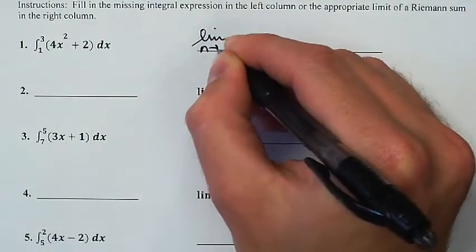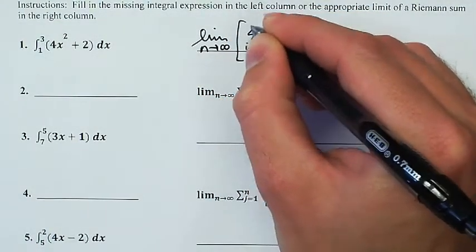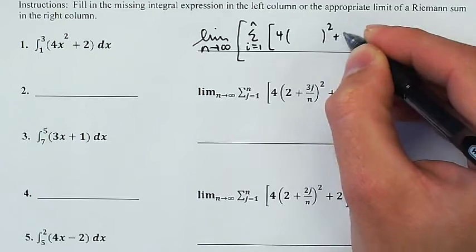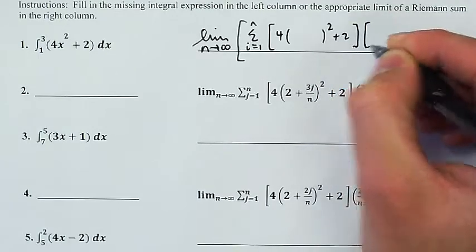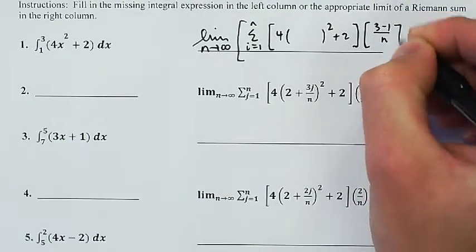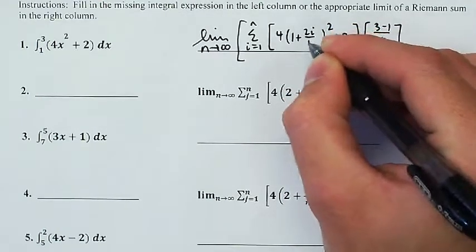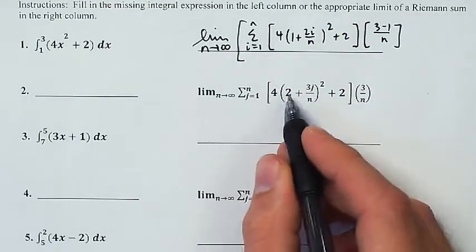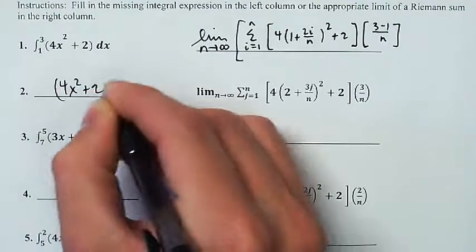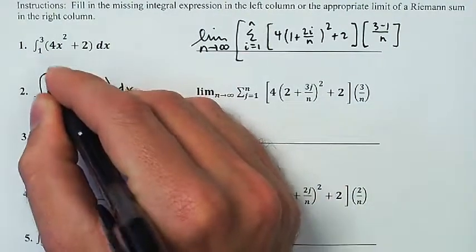So it starts with the limit as n goes to infinity of the Riemann sum. i runs from 1 up to n. The height is 4 times x² + 2. Width is (3 - 1) divided by n. x_i, x starts at 1 and then I add 2 over n times i. This one is going to be 4x² + 2 is the integrand. And the width of my interval is 3 and I start at 2. So that's going to be from 2 up to 5.